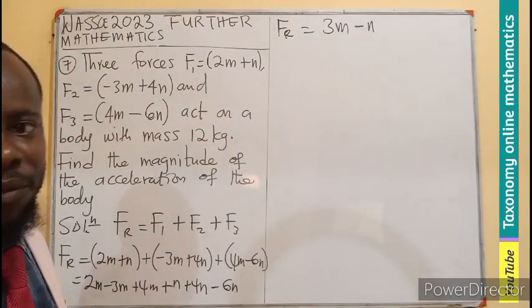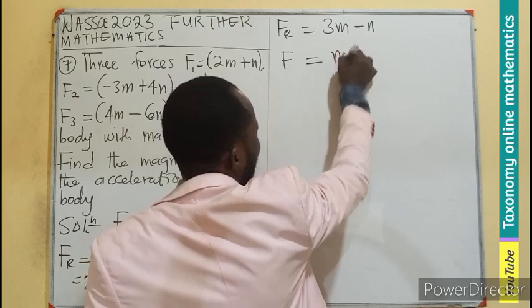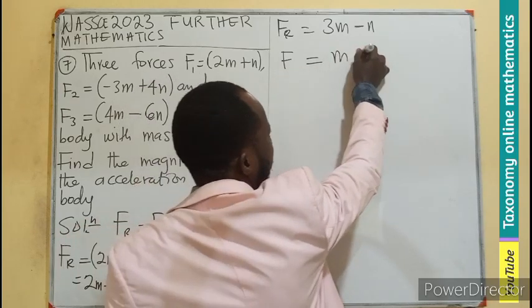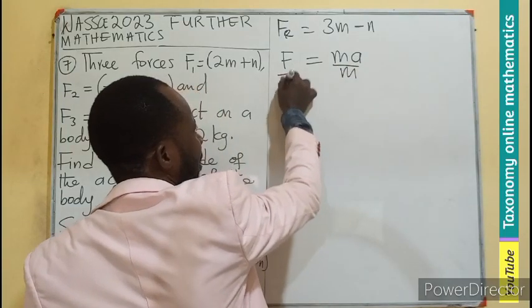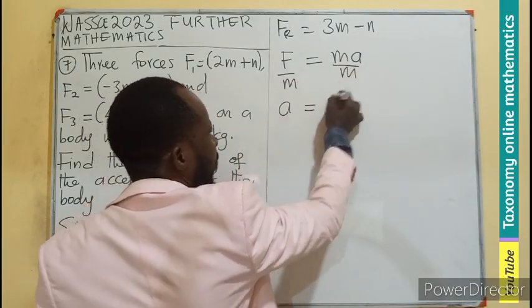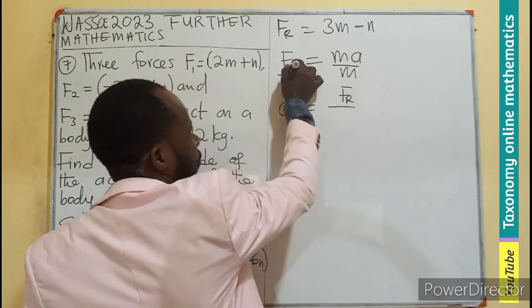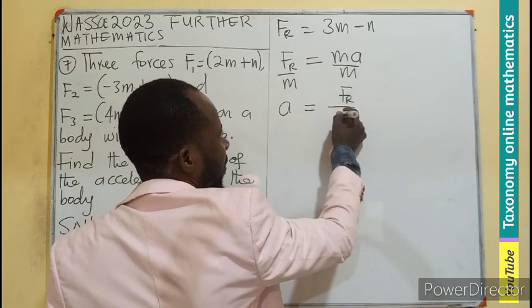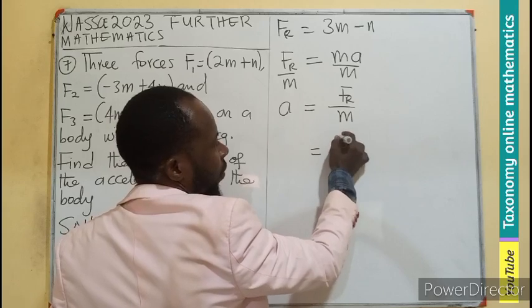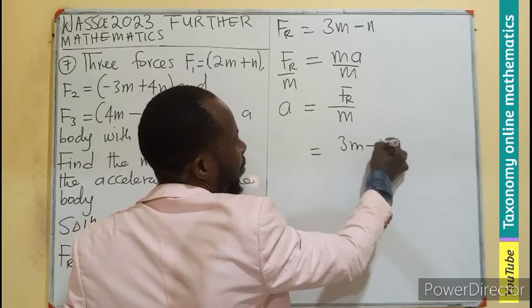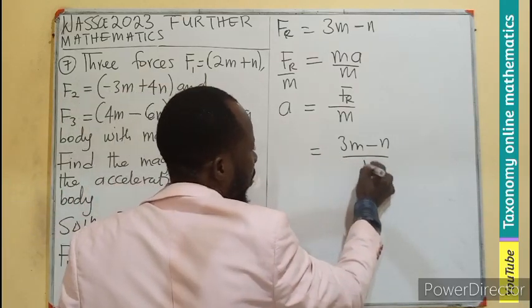So we know the resultant force. From the formula we quoted, force equals the mass times acceleration. Making the acceleration the subject, your acceleration is going to be the force of the body, in this case resultant force, divided by the mass. We simply put the force 3m minus n divided by the mass which we know as 12.